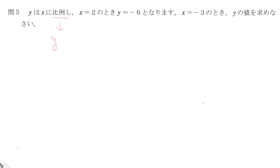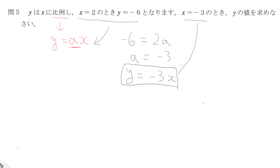問5: YはXに比例し、XイコールMの時 Yイコール-6となります。XイコールMの時のYの値を求めなさい. The keyword is 比例, which means we have a linear relationship between Y and X. We need an equation: Y equals A times X where A is a constant. Plugging in: minus 6 equals 2A, so A equals minus 3. Plugging in X = minus 3: Y equals minus 3 times minus 3, which is positive 9.